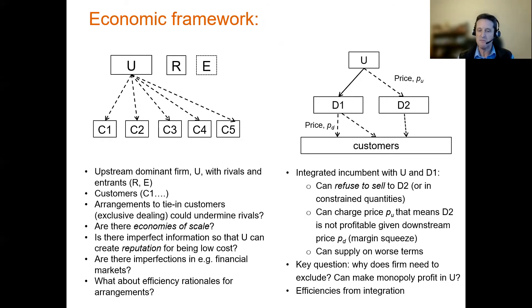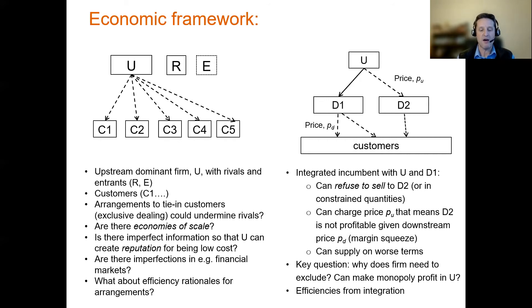In fact, jurisdictions like the USA are really outliers in terms of the size of their markets. Looking at the economic framework applied in abuse of dominance, we can think about it in two stylized ways. On the left, there's a situation where there's an upstream dominant firm facing a rival or an entrant, with a customer base downstream. In this situation, the upstream dominant firm can seek to block rivals and entrants from being able to compete by tying in customers.